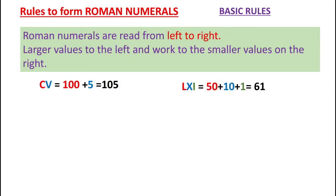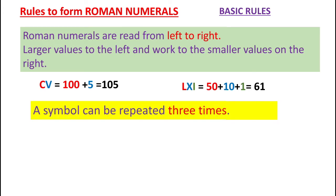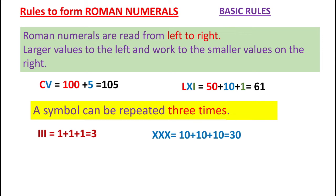The value of CV in Hindu-Arabic system equals 105. Similarly, LXI equals 50 plus 10 plus 1, since L equals 50, X equals 10, and I equals 1, giving us a value of 61. The second rule is that a symbol can be repeated up to 3 times. For 3, we write III, meaning 1 plus 1 plus 1 equals 3. Similarly, for 30, we write XXX, where each X represents 10.